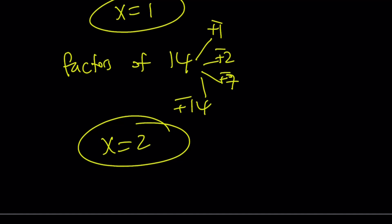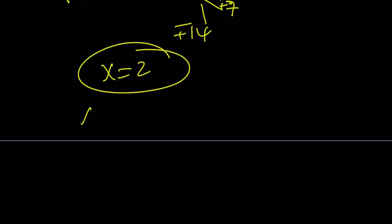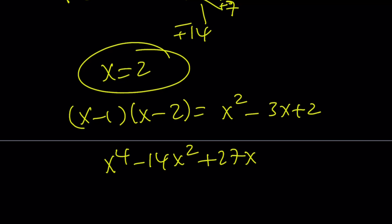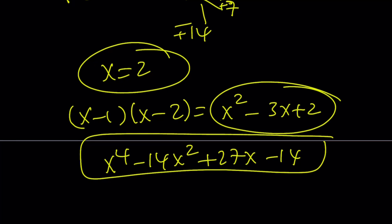So those are the two solutions. That's going to give us a quadratic. And the answer is quartic. So we'll get the other quadratic. If you multiply these two, you get x squared minus 3x plus 2. And our original quartic is x to the 4th minus 14x squared plus 27x minus 14. If you divide this quartic by that, you're going to get the other quadratic.